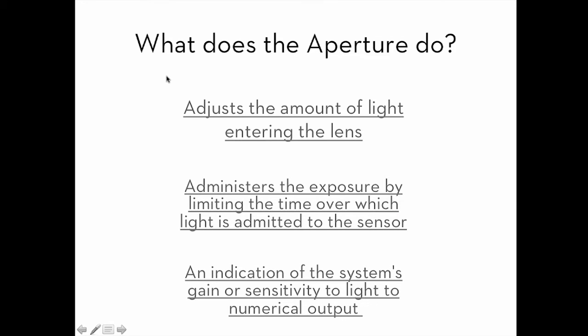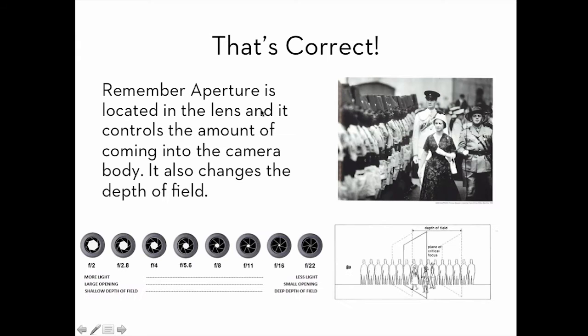This is a review. What does the aperture do? Does the aperture adjust the amount of light entering the lens? Does it administer exposure by limiting the amount of time which light is emitted through the sensor? Or is it an indication of the system's gain or sensitivity to light? It adjusts the amount of light entering the lens is correct. Remember, aperture is located in the lens and it controls the amount of light coming into the camera body. It also controls the depth of field, which we didn't really discuss yet. But remember, the bigger the aperture, the smaller the depth of field. This is a pretty small depth of field because only these things are in focus.